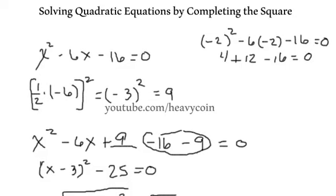We can see that 4 plus 12 is 16 and 16 minus 16 is 0, so we know that negative 2 is a solution. Our other solution was 8, so we're going to plug that in.